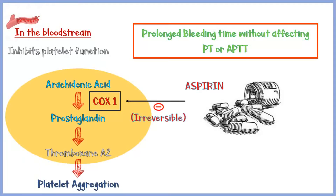Once COX-1 is irreversibly inhibited, the enzyme is no longer able to function. And as platelets lack nuclei, they cannot synthesize new COX-1 enzymes themselves. So to achieve a normal level of COX-1 enzymes, there must be new platelet formation in the bone marrow. This is the reason for the prolonged duration of action of the drug.